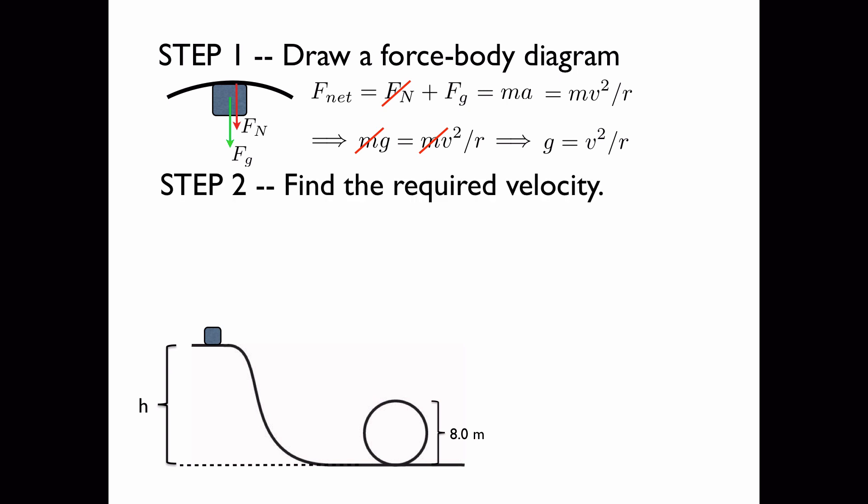So now we want to find this minimum velocity. We start with the relation we just found, g equals v squared over r. And multiplying both sides by r, we have that v squared is equal to rg.